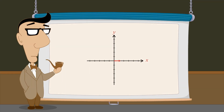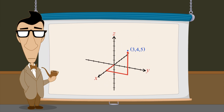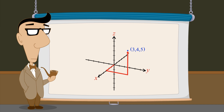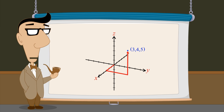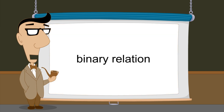Now that we have a way to visualize ordered pairs of real numbers as points on a plane, or ordered triples as points in space, the next step will be to create sets of ordered pairs which represent relations between different types of quantities. If the quantities can be represented by real numbers, then these relationships can be visualized in two- or three-dimensional space. We will do this in the next lecture by introducing the concept of a binary relation.